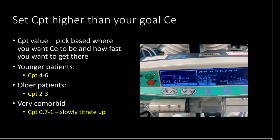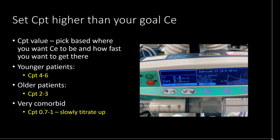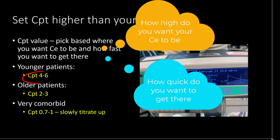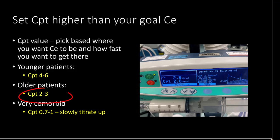What plasma target value should you pick? You're going to pick based on where you want your effect compartment to be and how fast you want to get there. In younger patients we'll probably pick a number between four and six. In older patients, a value between about two and three. In a very comorbid patient, we might go really low and then very slowly titrate up.